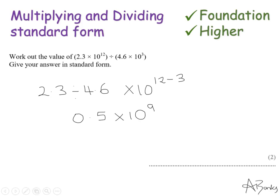And just like that time, I'm not quite finished yet. Because this number at the front here is not yet between 1 and 10. So I need to make it between 1 and 10. So I'm going to times it by 10. That'll give me 5. Which means I need to divide my power by 10, which means reducing my power by 1. So my answer is 5 times 10 to the power of 8.